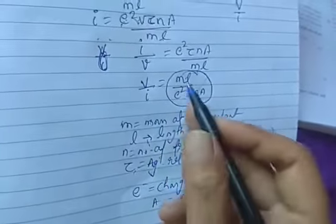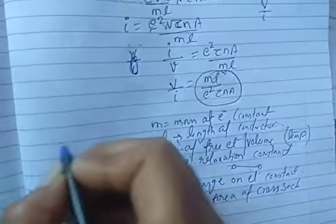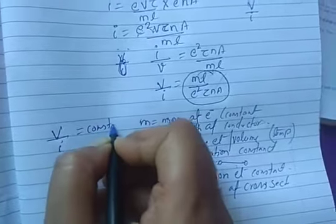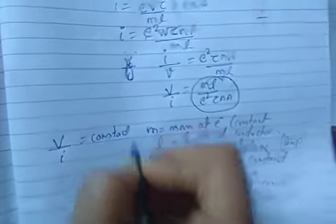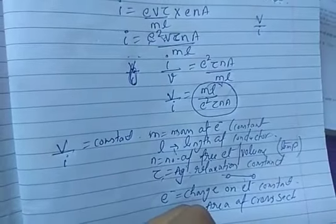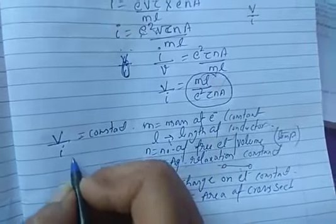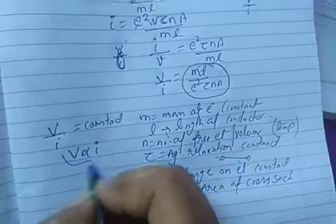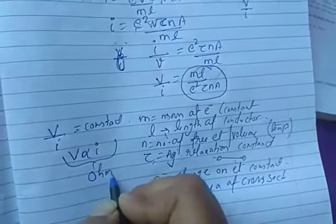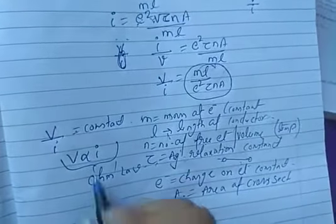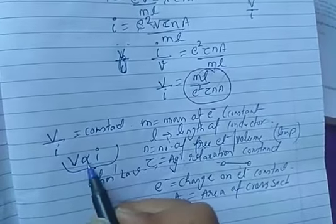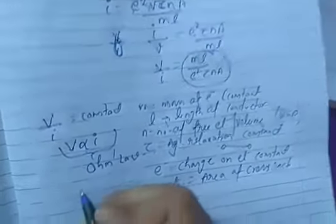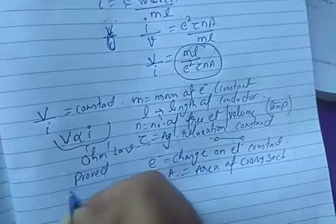Since all those quantities are constant, V/I equals a constant. Therefore V is proportional to I — which is exactly what Ohm's law states. This completes our proof of Ohm's law.